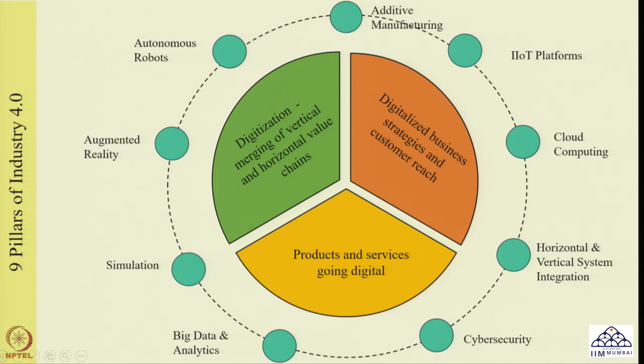In the previous session we had a very brief introduction of those technologies. In today's session we will try to go into the details of these technologies one by one. Today's session will focus more on these technologies covered under Industry 4.0 - the nine pillars which include IoT, cloud computing, horizontal and vertical system integration, cyber security, big data analytics, simulation, augmented reality, autonomous robots, and additive manufacturing. We will discuss these technologies one by one, starting first with IoT platforms.